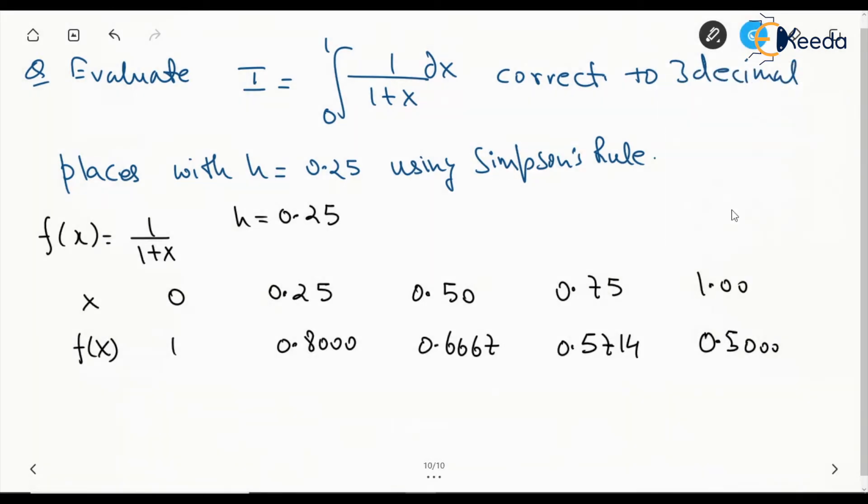Now, we started from x equals 0. This is x₀, this is x₁, x₂, x₃, and this is x₄. So these values of y will become y₀, y₁, y₂, y₃, and y₄. The number of intervals is 1, 2, 3, and 4. The number of intervals was supposed to be even for Simpson's Rule.